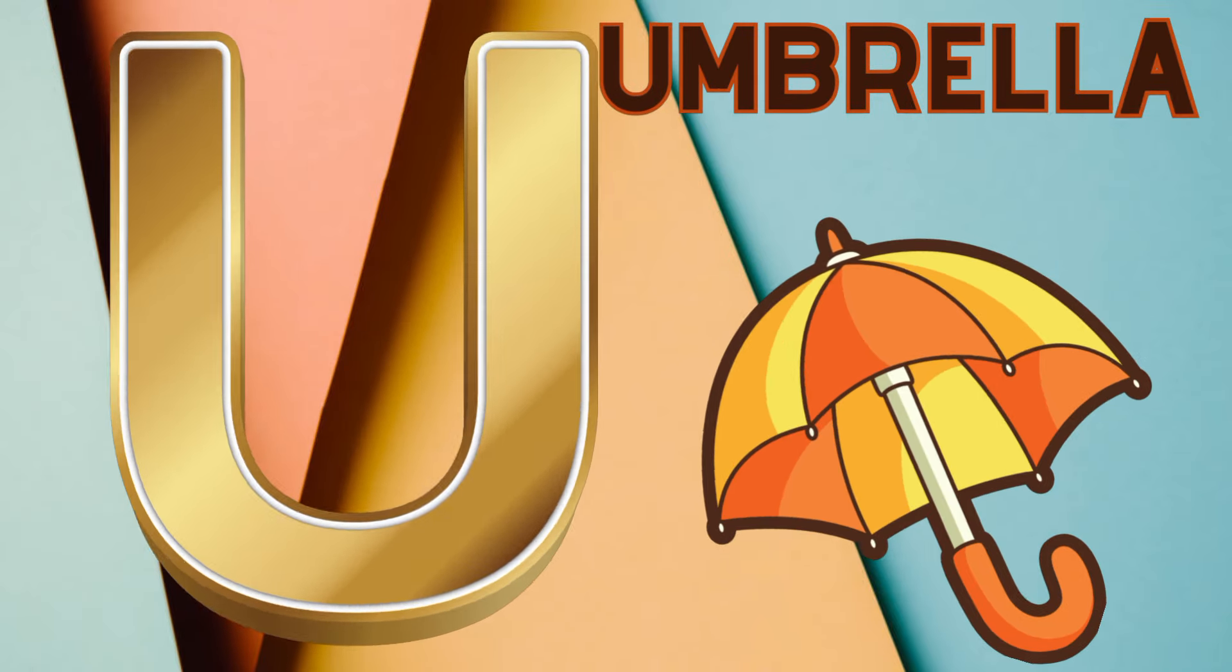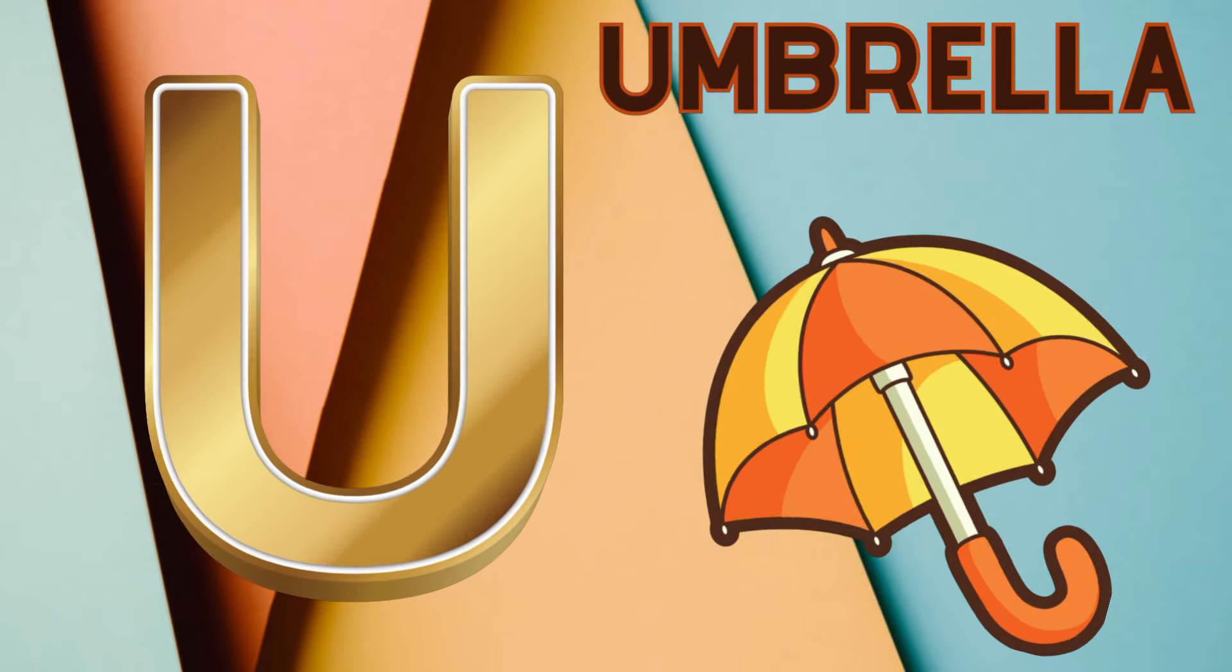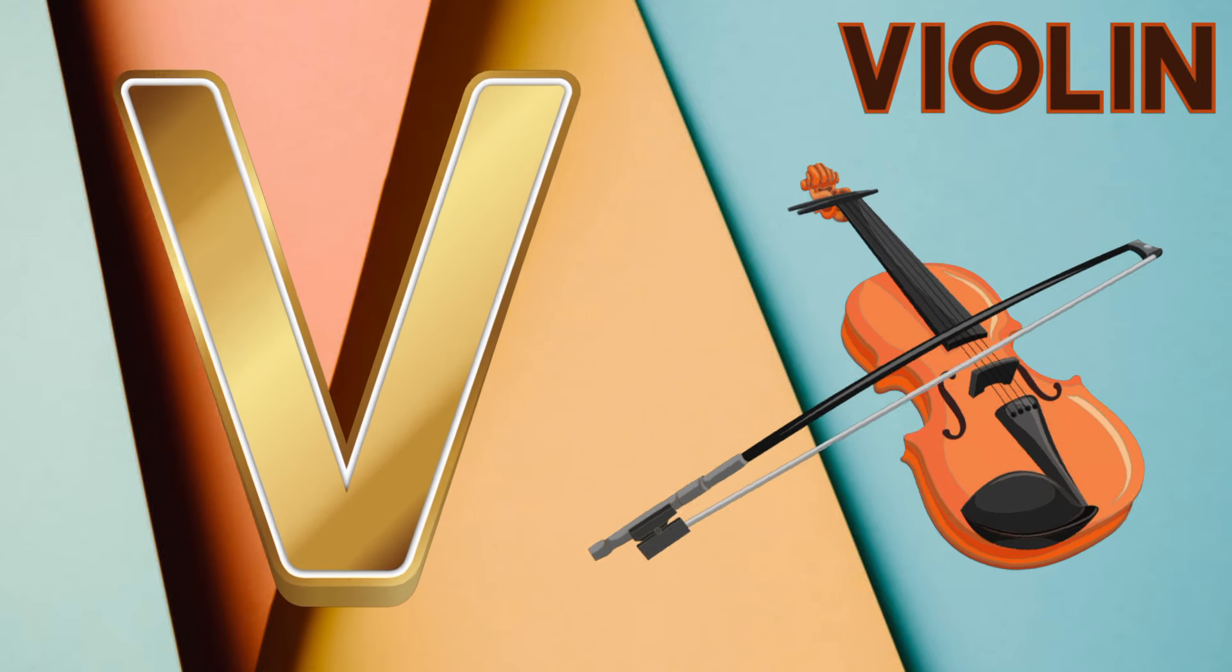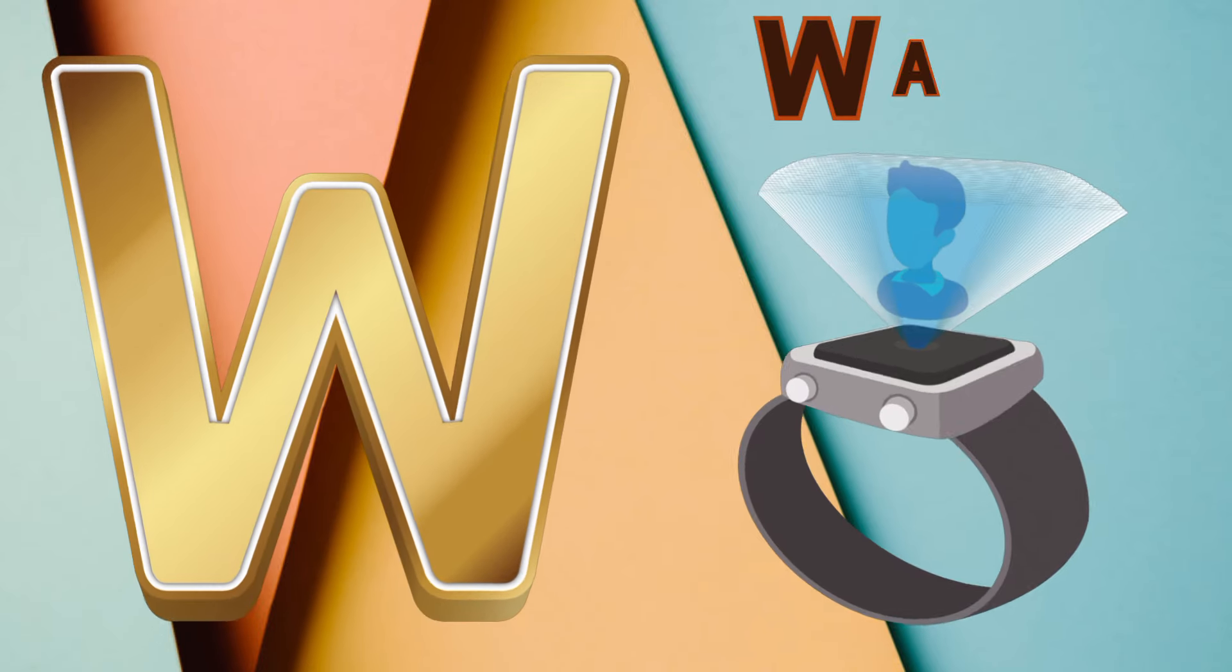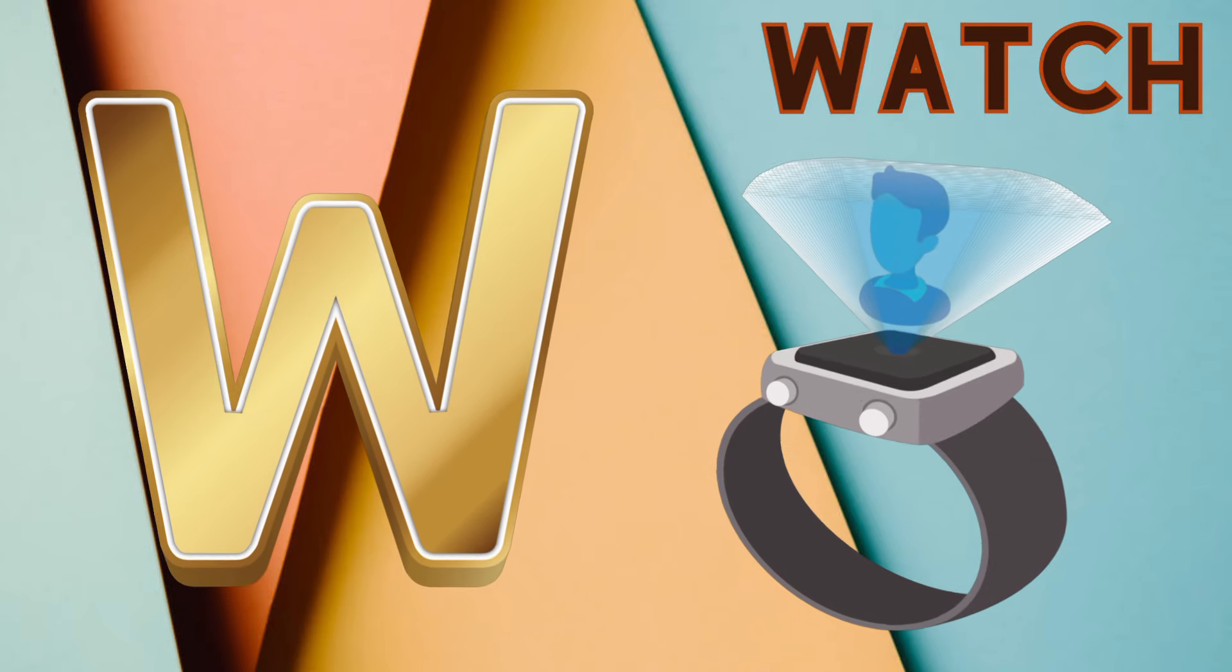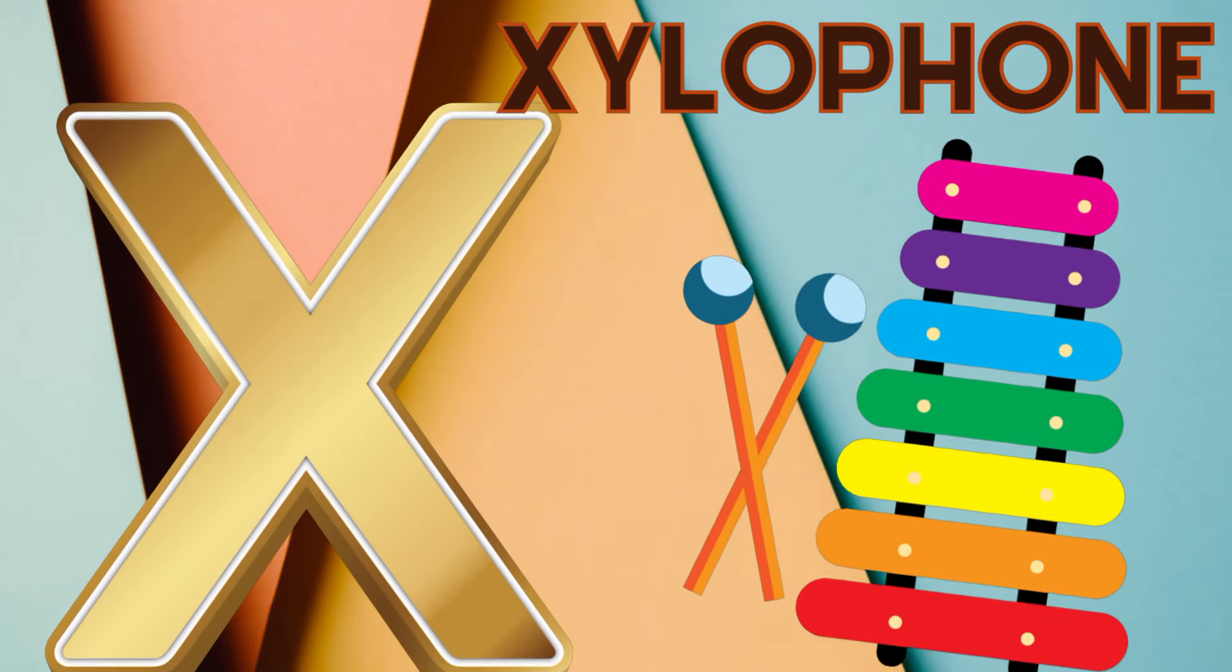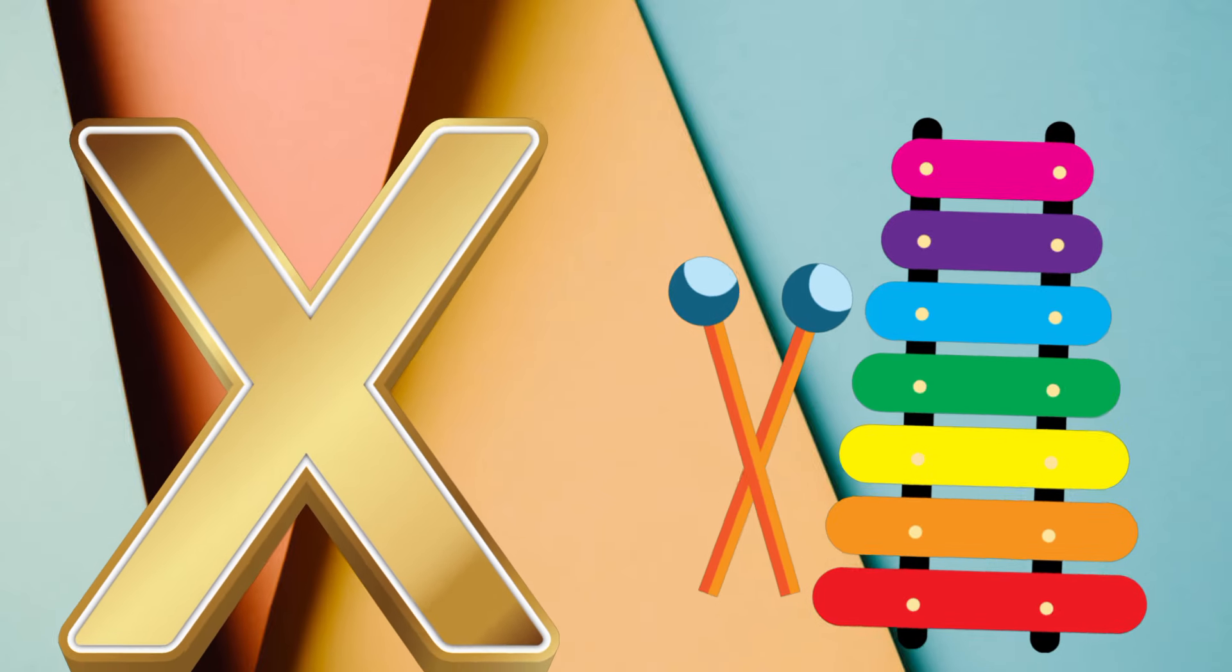U is for umbrella, u-u-u-umbrella. V is for violin, v-v-violin. W is for watch, w-w-watch. X is for xylophone, z-z-xylophone.